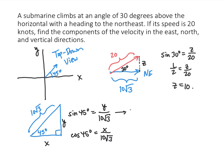Sine of 45 is square root of 2 over 2, so square root of 2 over 2 equals y over 10 radical 3. Solve for y, and we get 5 times the square root of 6 for the y component. And similarly, it's the exact same equation, we get 5 times the square root of 6 for the x component. So the velocity vector we're looking for is 5 radical 6 comma 5 radical 6 comma 10.